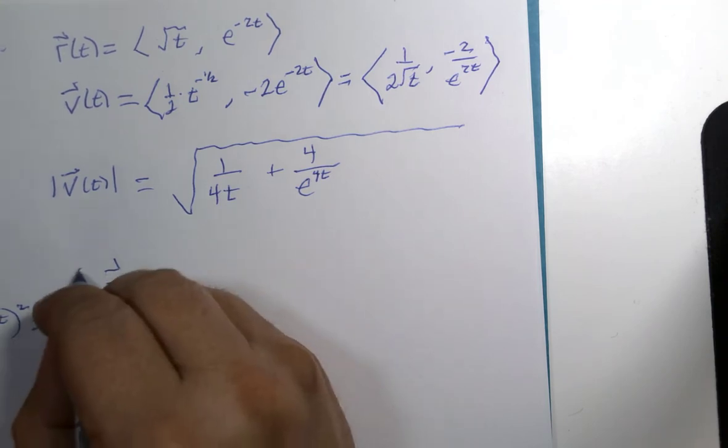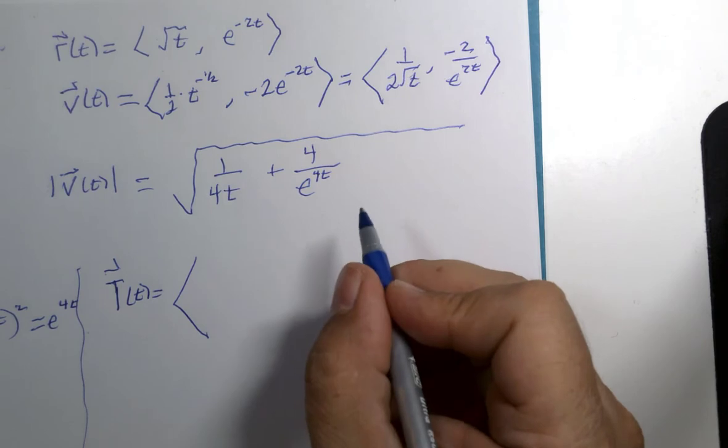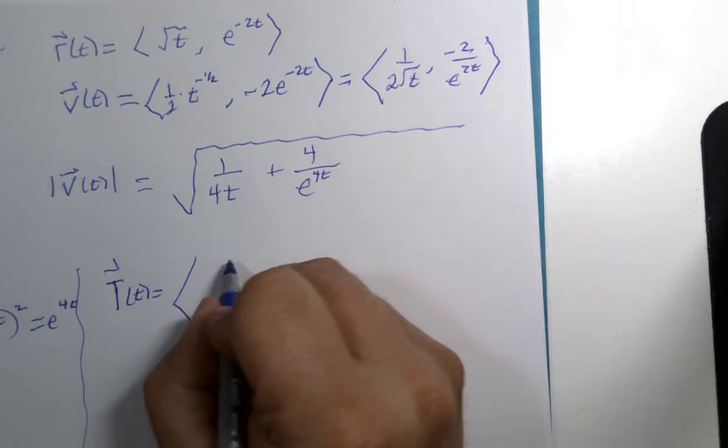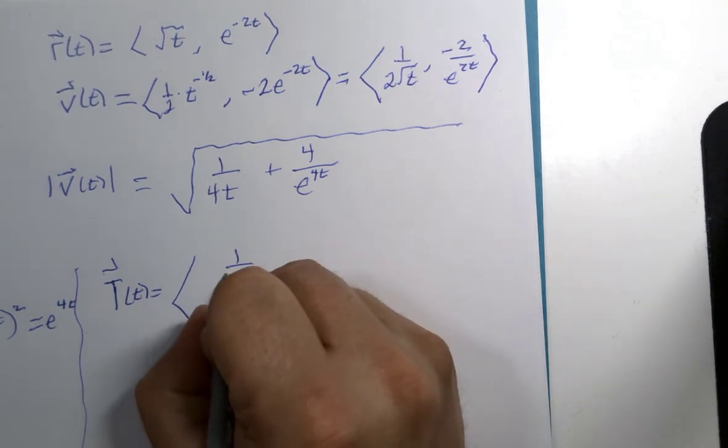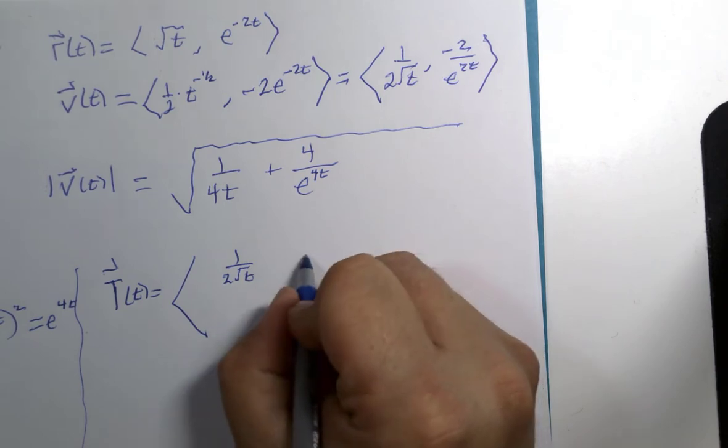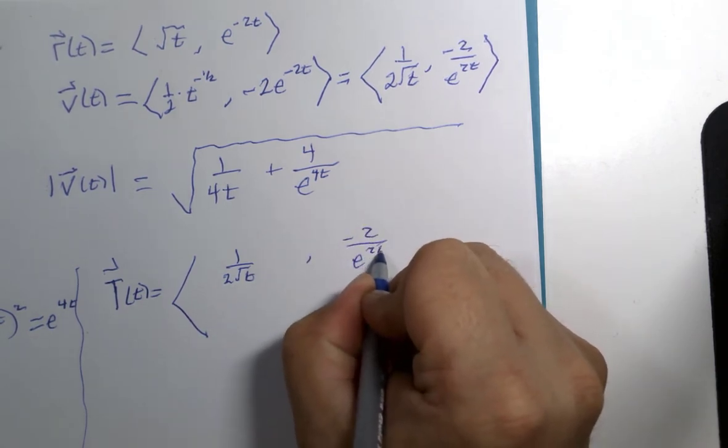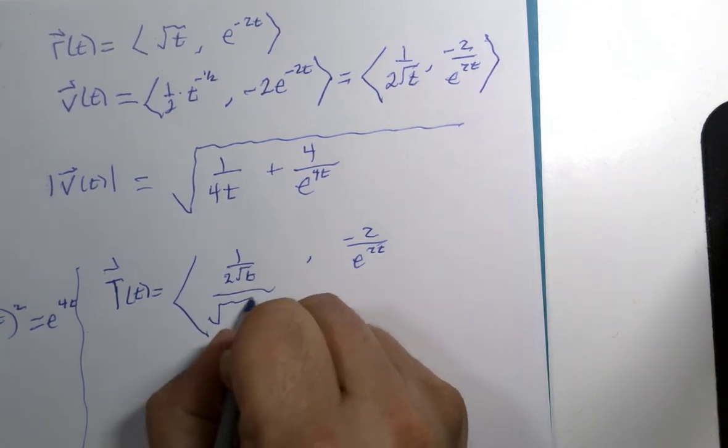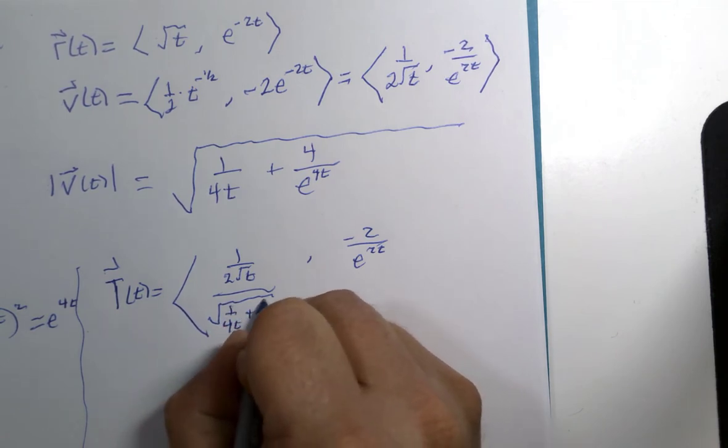Capital T, here, let's get this out of the way. Oh, this is going to be messy. 1 over 2 root t, negative 2 over e to the 2t, over 1 over 4t, plus 4 over e to the 4t.